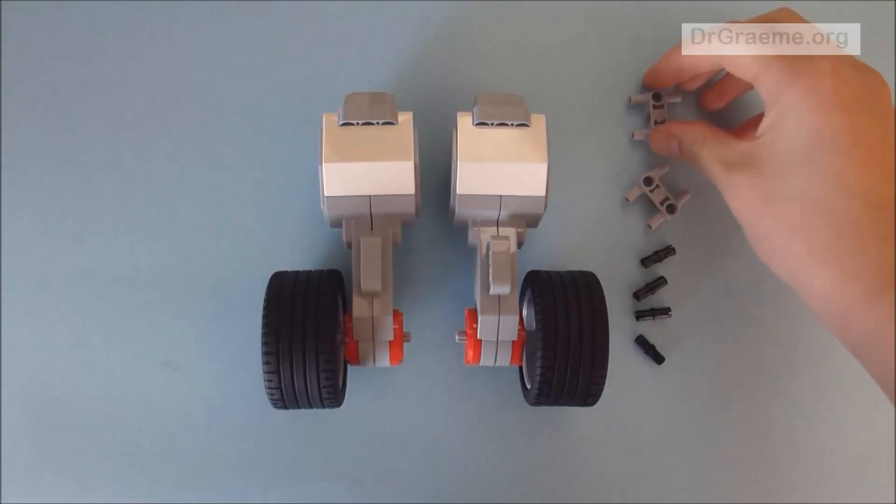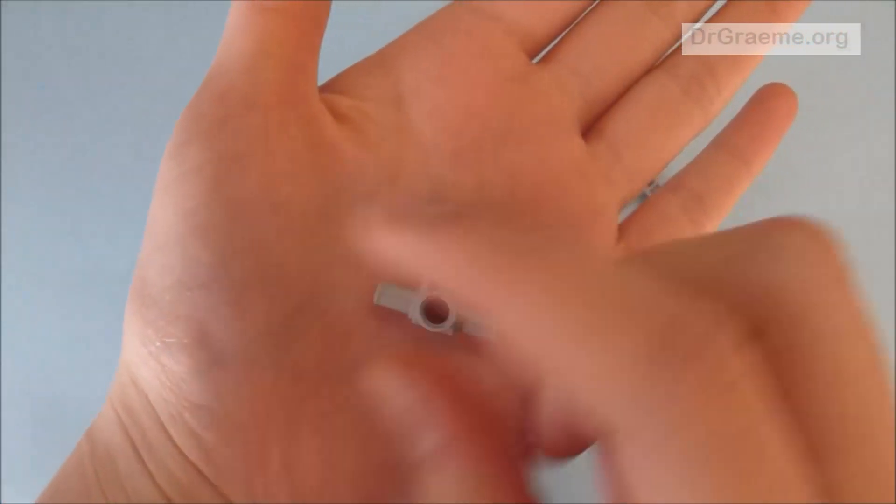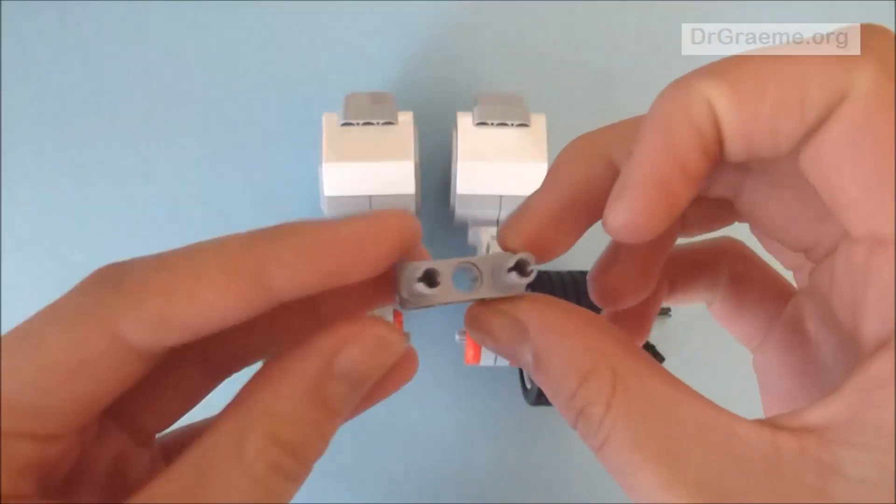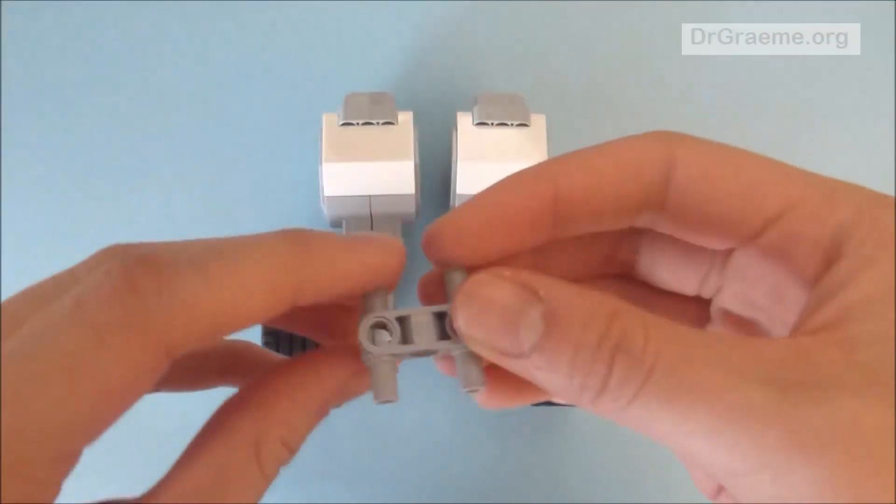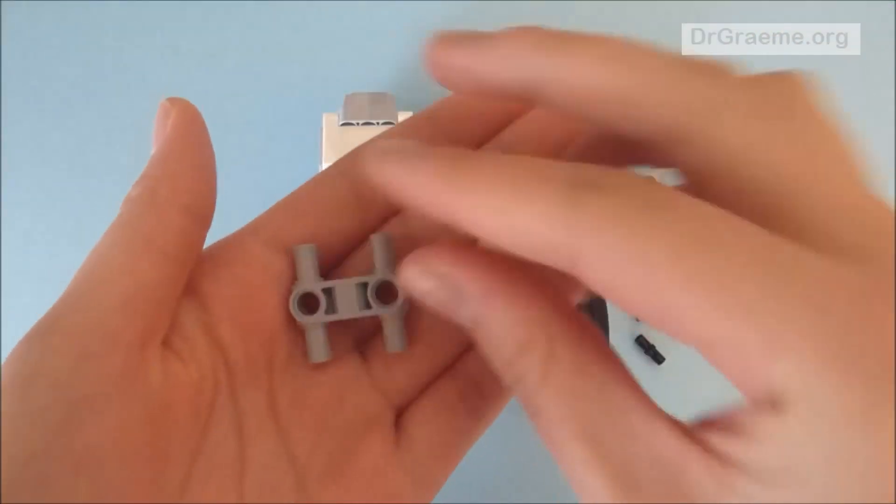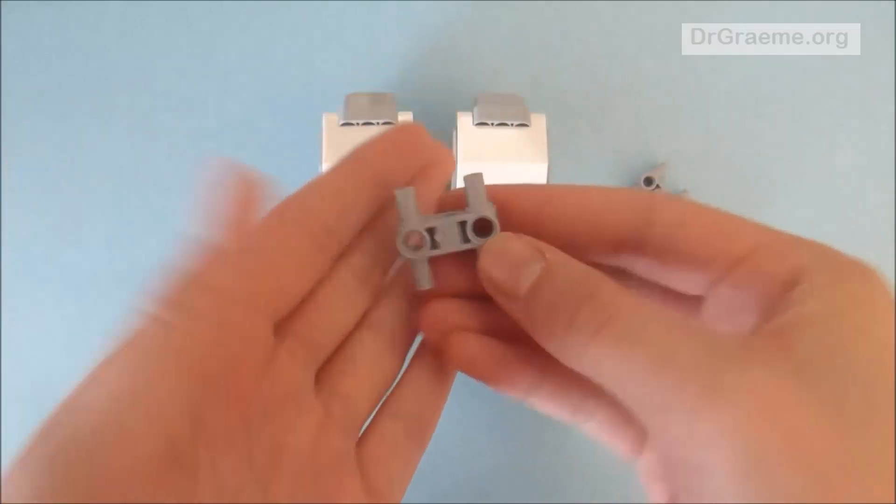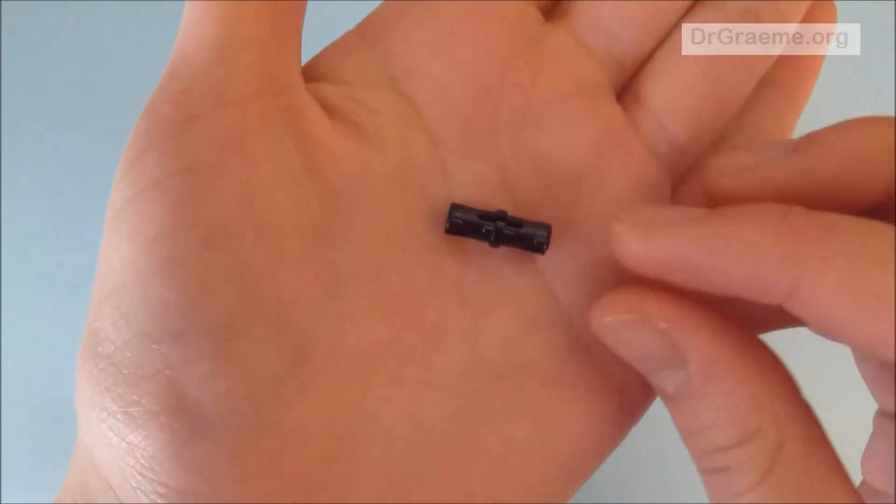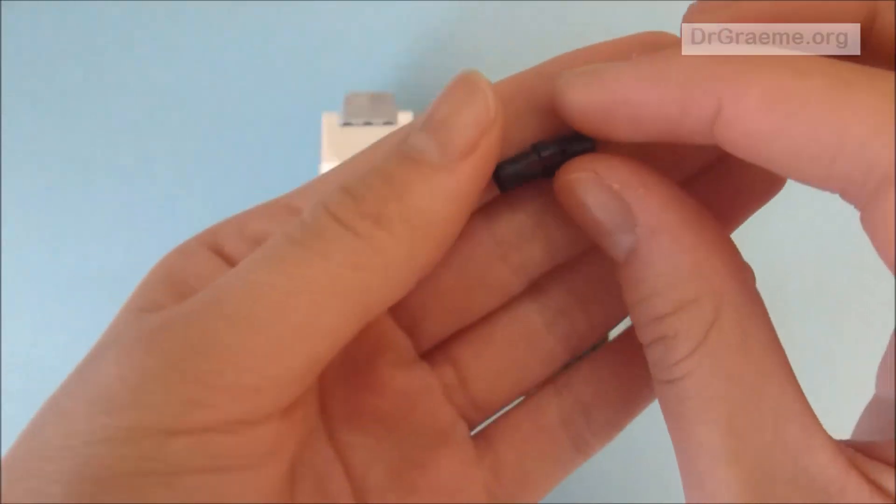So here we have two H pieces, which are unique in that they have connections on either side and two holes in the middle. We also have four short black connector rods with ridges in the middle.